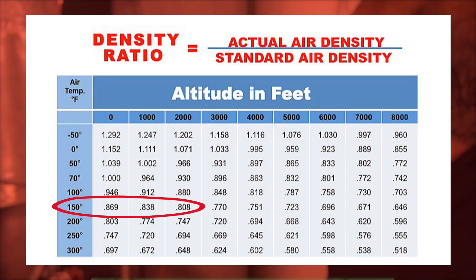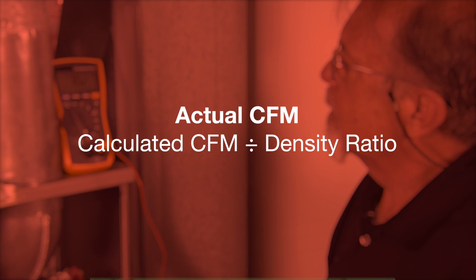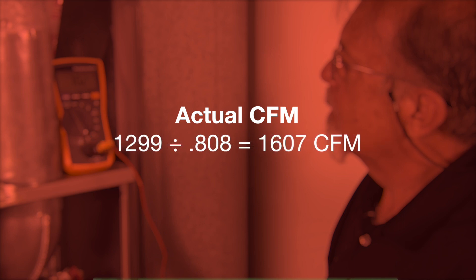If our air temperature was 150 degrees and we were at 2,000 feet, our density ratio factor would be 0.808. To determine the actual CFM being delivered, divide the measured average calculated CFM by the density ratio factor. In this example, our calculated CFM of 1,299 divided by 0.808 equals 1,607 cubic feet per minute.